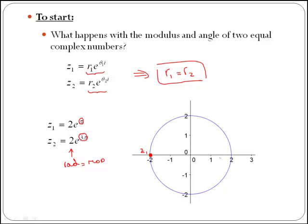What about z2? z2 has an angle of 3π. So 3π is nothing else but 2π plus π, and 2π is a complete revolution. So we start here, we do a complete revolution, and then we have to add π. So we end up in exactly the same place as where z1 was.